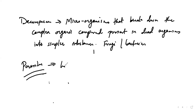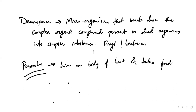Parasites means the organisms which live on the body of the host and take food from it. Basically, from however the host is going to live, only from that the nutrition it will take and it will survive. Those things are called parasites. This is one more thing you can include in the consumer category.